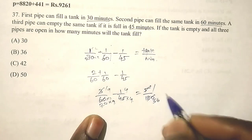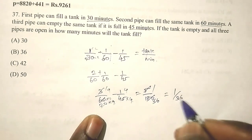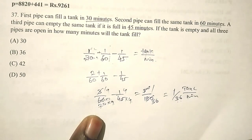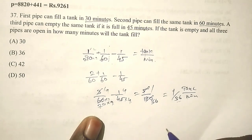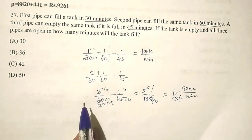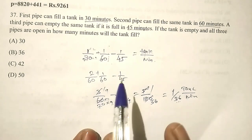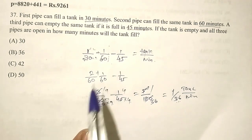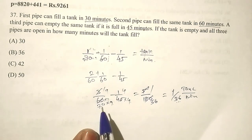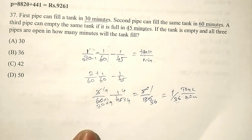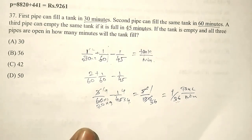The value comes out to 180 over the net rate. The answer is 36 minutes. If the denominator equals the sum, the calculation is straightforward. When the denominator equals the sum, it makes it easier to find the result. Thank you, friend.